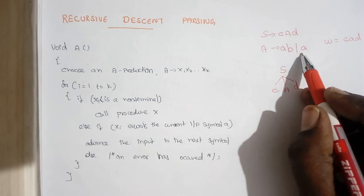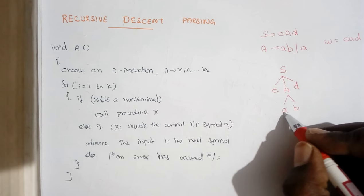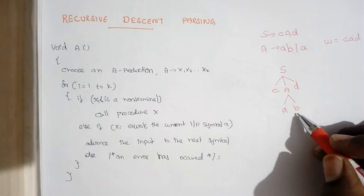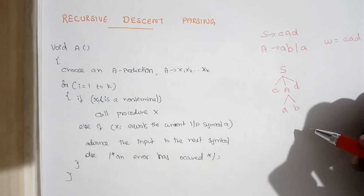For a we have two different predictions. When you have two different predictions, we take one at a time. We start with the first prediction. So a can be replaced with a b. Now when you compare this with the input symbol, this a and this a matches. But in the parse tree which we derive, we have b, but actually in the input we have d. So there is a mismatch between the input and the parse tree.